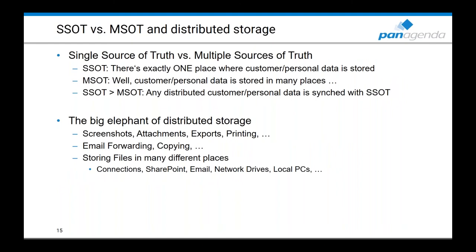Speaking of single source of truth versus multiple sources of truth: this is all about distributed storage. In many organizations there is no such thing as one record per person or EU citizen. It's not like there's just one database where you find a name, email address, or other details. In large organizations, reality is that you have the same person in the CRM, stored across mail files, Excel sheets, and many different places — which is typically the multiple sources of truth situation.